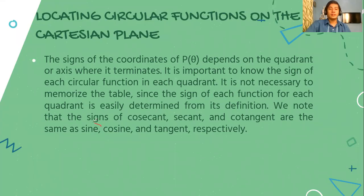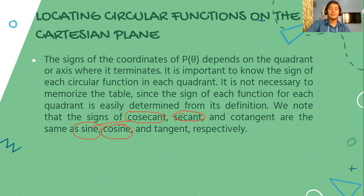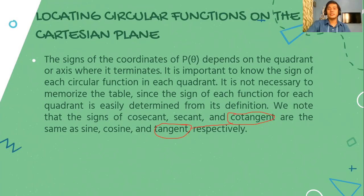For example, if the sine function is positive, then its reciprocal, which is cosecant, is also positive. If it is negative, then cosecant will also follow. In the same way, when the cosine function is positive, the secant function will also be positive, and if the cosine function is negative, then the secant function will also be negative. The same rule will be followed for the tangent function and the cotangent function — whatever their signs will be the same respectively.